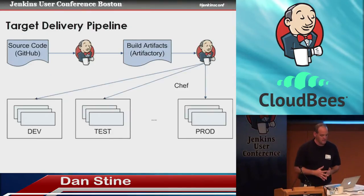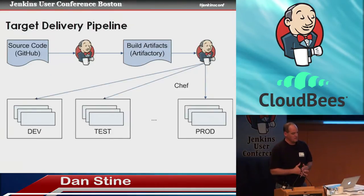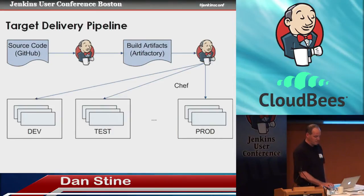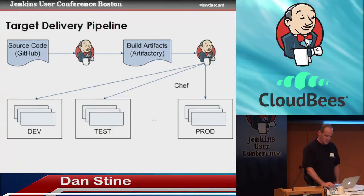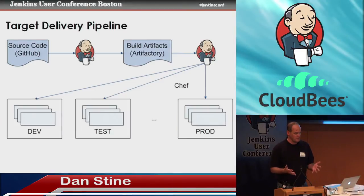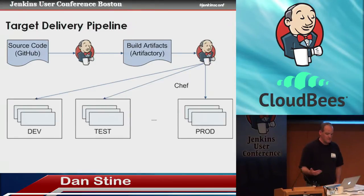Our target delivery pipeline looks like this: all the same elements, but up in the corner we've got Jenkins again as a deployment coordinator, and Chef running on the various machines to install and configure applications. Jenkins was a natural choice — we're already using it, we're familiar with it. In addition to being flexible, open source, with a good community, Chef had those same qualities, other than the fact that we weren't familiar with it — we hadn't used it.